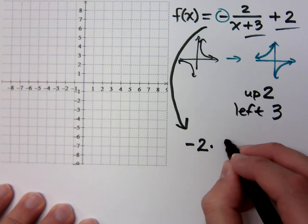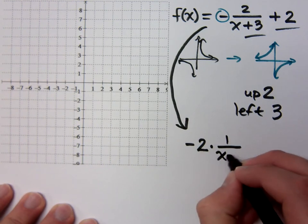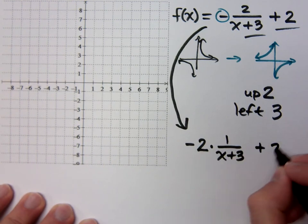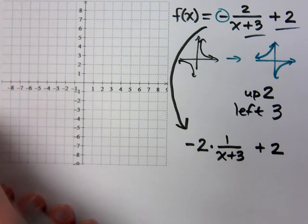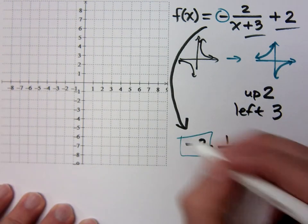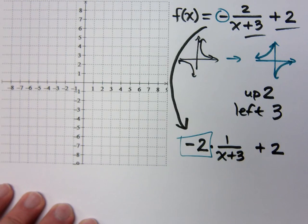This is negative two times one over x plus three plus two, right? Isn't that what it is? So, since this is larger than one, it's going to stretch this guy.